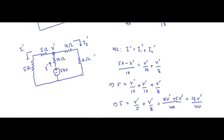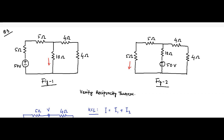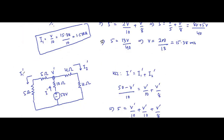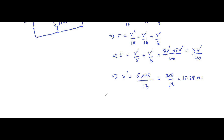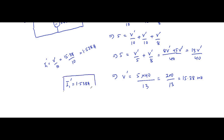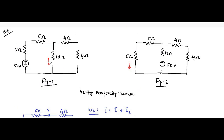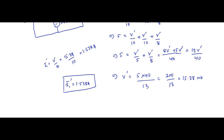Now we determine the current of interest: the current flowing through the two 5 ohm resistors, which is I1 dash. That current equals V dash by (5 plus 5), which is V dash by 10. So I1 dash equals 15.38 by 10, equal to 1.538 amperes. Previously we calculated the first circuit current I1 as 1.538 amperes also.